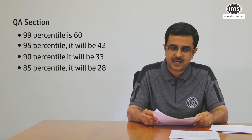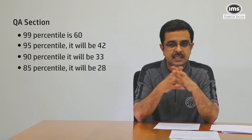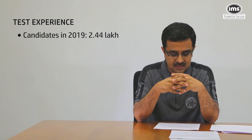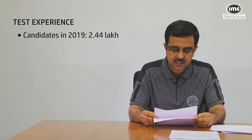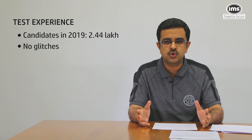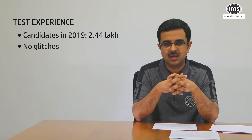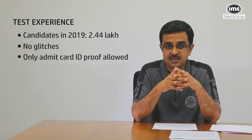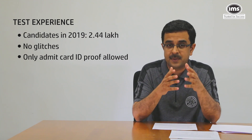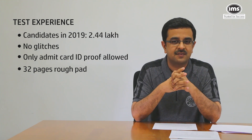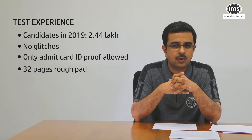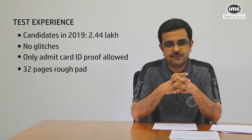Compared to slot 1 of CAT 2019, the QA section of slot 2 was marginally easier. Looking at the overall test experience: about 2.44 lakh candidates registered for CAT this year, appearing across 156 cities in 370 exam centers. The administrative process was fairly smooth with no reported glitches. The policy of no shoes and no metallic objects including metal jewelry prevailed. Only the admit card and ID proof were allowed inside. The authorities took possession of admit cards and gave candidates a small pad with the IMS CAT logo on the cover — about 32 pages for rough work and a pen — both taken away at the end of the exam.